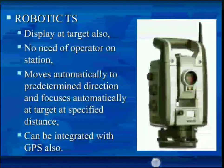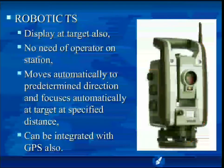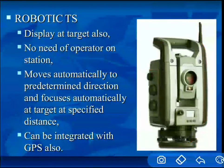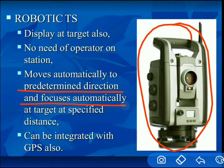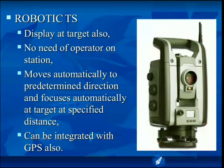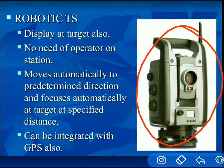Robotic total station is the advanced version. It is automatically operated by itself — no need for manpower. It can automatically predetermine the direction and focus on the target at a specified distance. It can also be integrated with GPS. Nowadays robotic total stations are not very popular, but normal total stations from various companies are widely used.